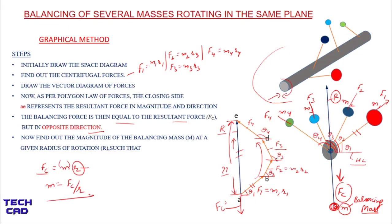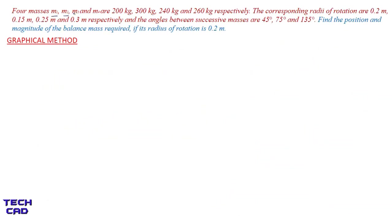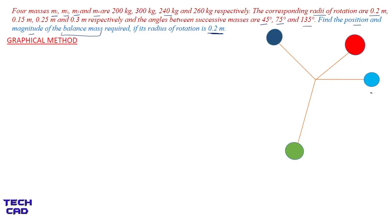Now we will understand this graphical method with the help of a numerical. Four masses m1 to m4 are given with their corresponding radii of rotation, and the angles between successive masses are also given. You have to find out the position and magnitude of the balancing mass required if its radius of rotation is 0.2 m. First, make the space diagram.